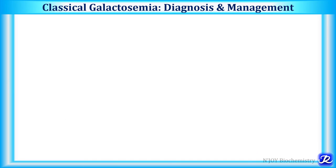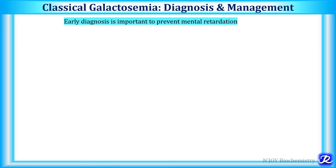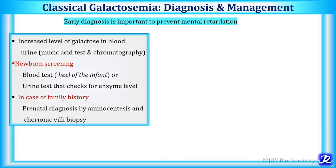Early diagnosis of classic galactosemia is very important to prevent mental retardation, because once it develops it cannot be reversed. This condition can be diagnosed by measuring galactose concentration in blood and urine — levels are increased. The mucic acid test is specific for the presence of galactose in urine; chromatography can also be used. Newborn screening is done by blood or urine tests checking enzyme levels, and if there is a family history, prenatal diagnosis can be done by amniocentesis or chorionic villus biopsy.